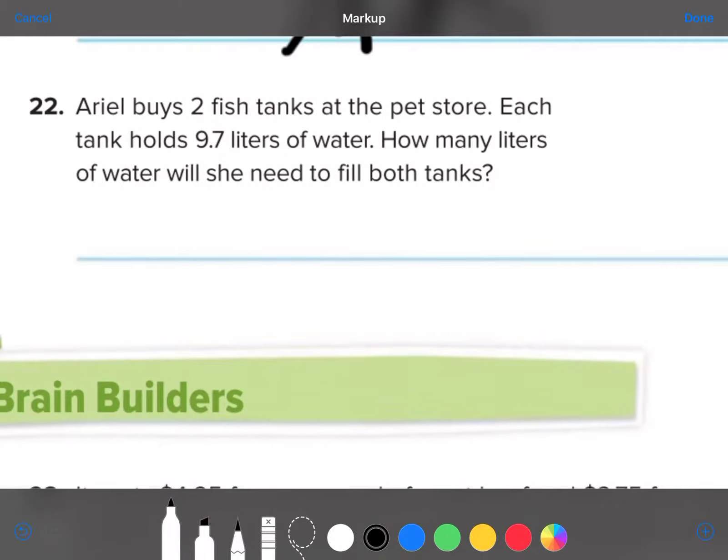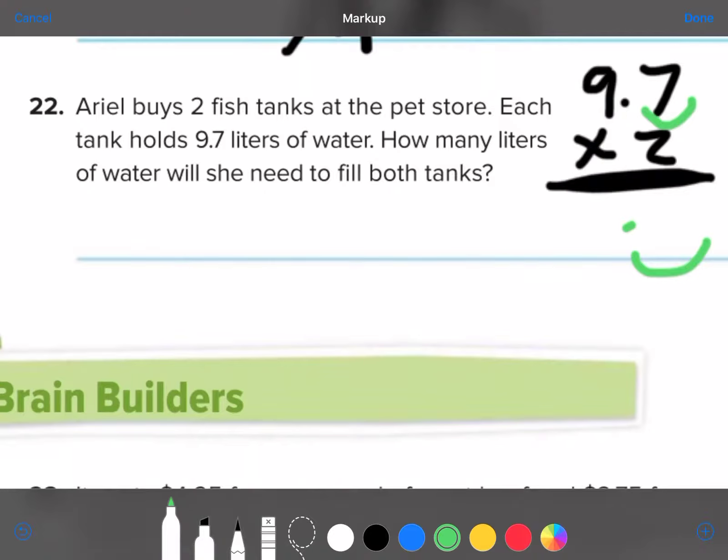Ariel buys 2 fish tanks at the pet store. Each tank holds 9.7 liters. Excuse me. How many liters of water will she need to fill both tanks? Okay, this is where you're going to do 9.7 times 2. After you multiply that out, you're going to come back one decimal point to find out what the answer is. And, you're going to mark the answer in liters.